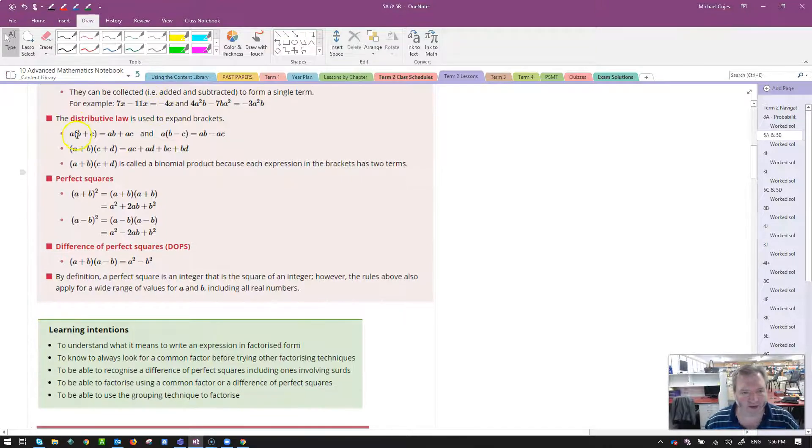The distributive law, we know how to do that. Everything in front of the bracket multiplies everything inside the bracket. When you have two brackets, make sure that each term multiplies. Each term in the first bracket multiplies each term in the second bracket. Remember, they are binomial products, binomial meaning two names or two terms.